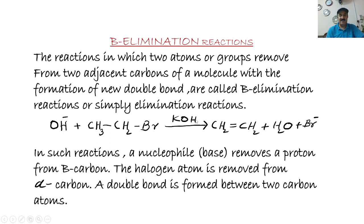Here OH⁻ is the nucleophile. CH₃CH₂Br in the presence of KOH gives CH₂=CH₂ — it forms ethene — plus water plus bromide ion.